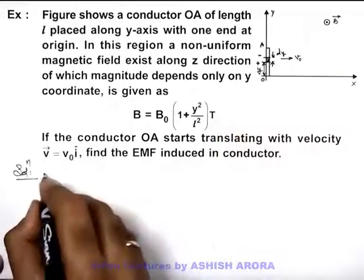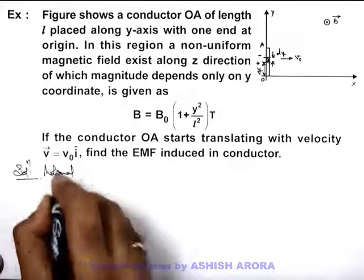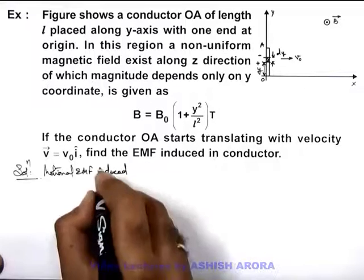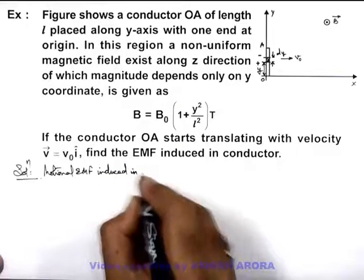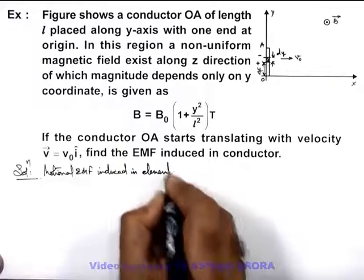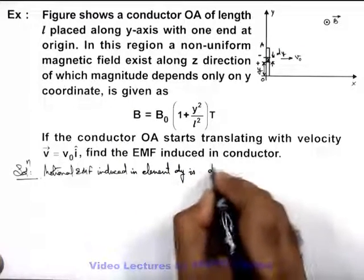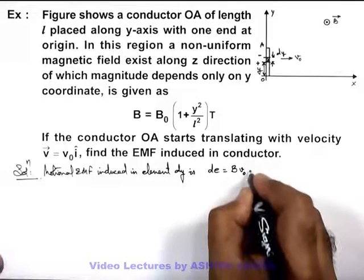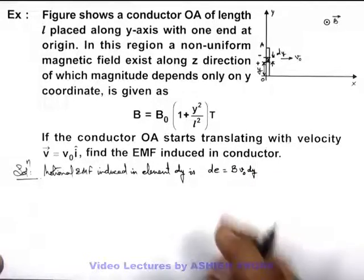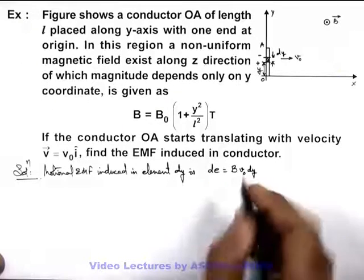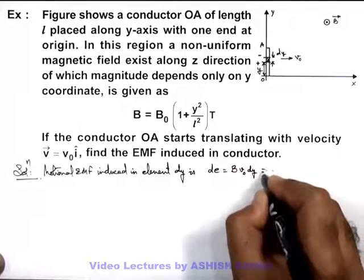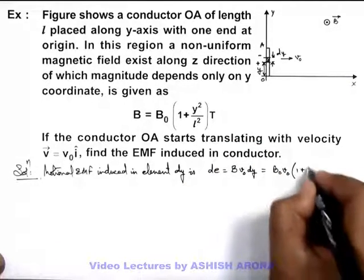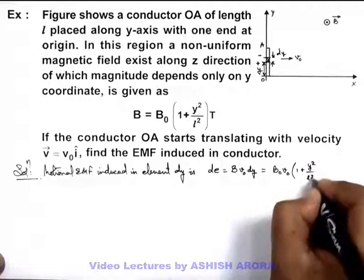We can directly write: motional EMF induced in element dY is dε = B·V₀·dY, because motional EMF is given as BVL. Here B we can substitute as a function of Y, which is B₀·V₀(1 + y²/l²)dY. This is the motional EMF induced in element dY.